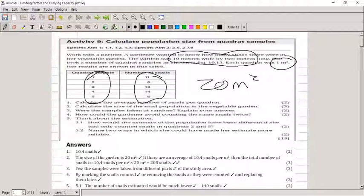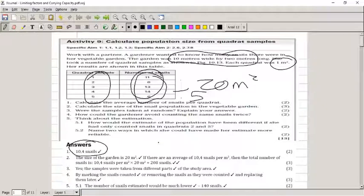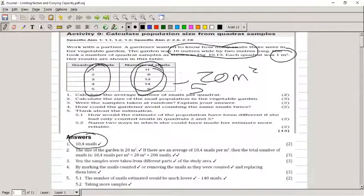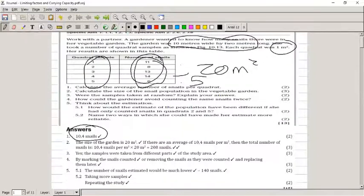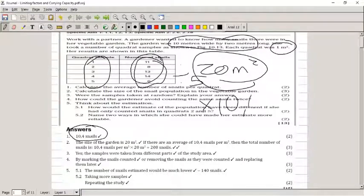Then they told you to calculate the average number of snails per quadrat. You added all of these together and divided by 5, which gives 10.4 snails per quadrat. To calculate the population of snails in the garden, you take your 20 square meters and times that by 10.4 snails per square meter, and you should have received about 208 snails in the garden.